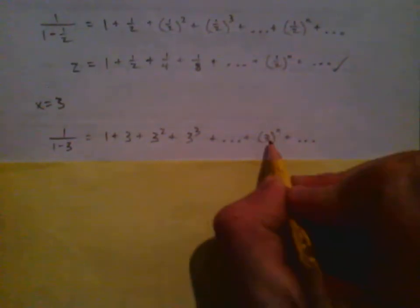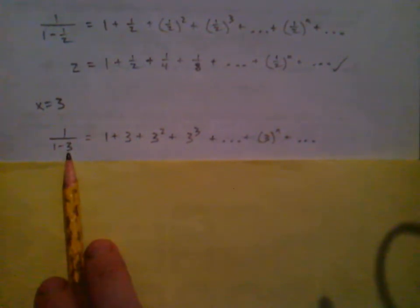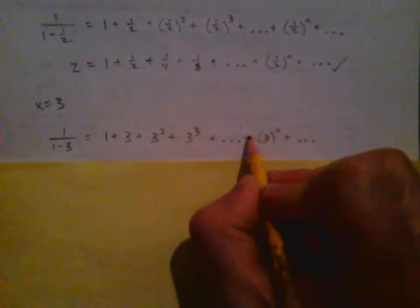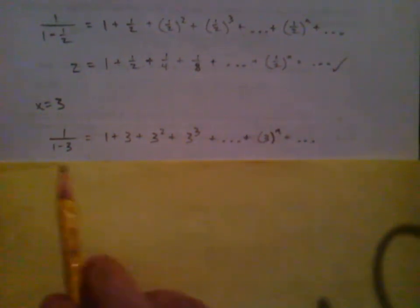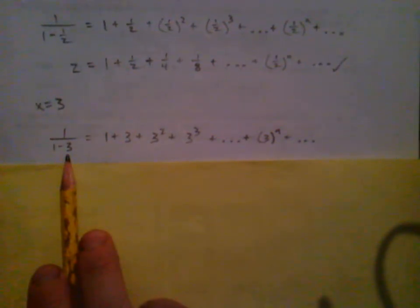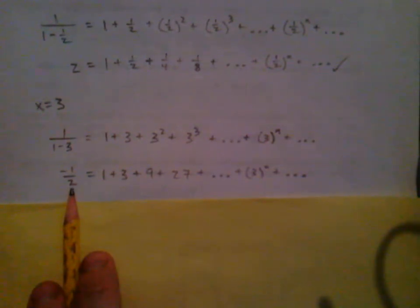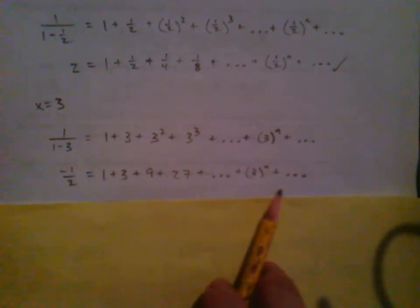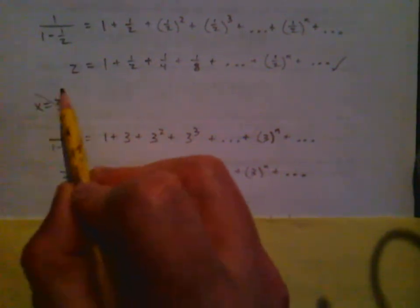Now let's pick a value outside the interval: x = 3. Plugging in three: 1/(1 − 3) = 1 + 3 + 3² + 3³ + ... + 3^n + ... Are these equal? Definitely not. The left side is 1/(−2) = −1/2. On the right side, 1 + 3 + 9 + 27 — these terms are getting bigger and bigger, blowing up to infinity. That is certainly not equal to −1/2, so this did not work at all.